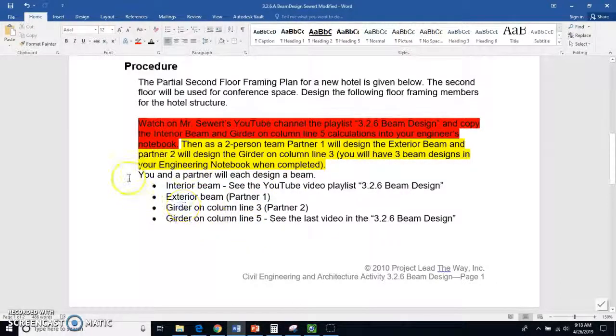So the interior beam that's on the playlist, the exterior beam is not on the playlist, partner one is going to design that one. Girder on column line 3, that is an internal girder, partner number two is going to do that one. And then girder on column line 5 is going to be shown to you in this video, and a couple things pointed out about girders that are different than beams.